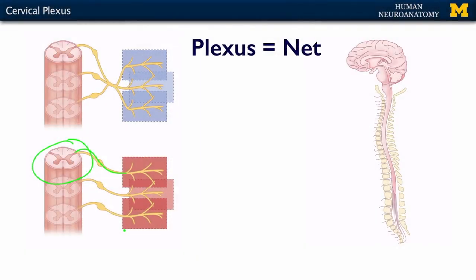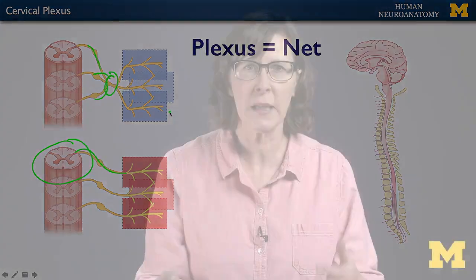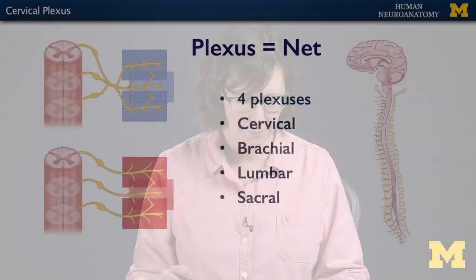What I want to talk about in this lecture is the concept of a plexus, or a net. That's where several of these peripheral nerves are going to come together, form a big network, and then split up again as they get closer to their targets. We'll go through some of the specific nerve plexuses that exist in your body.